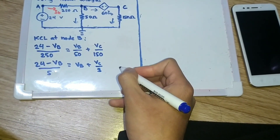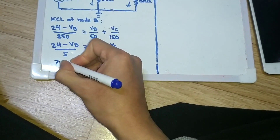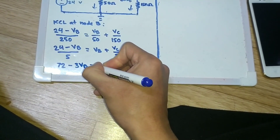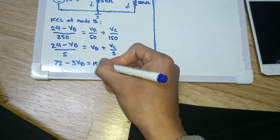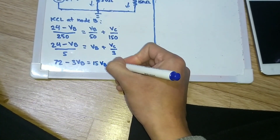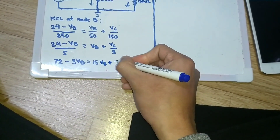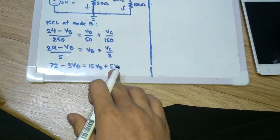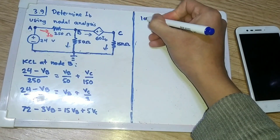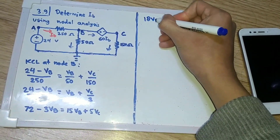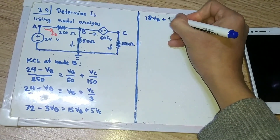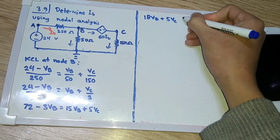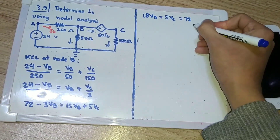Then we multiply both sides by 15, so we get 72 minus 3VB minus 3VB, which equals 15VB plus 5VC. Doing some math to simplify, we get 18VB plus 5VC equals 72. Let's save this as equation number one.